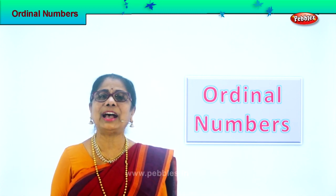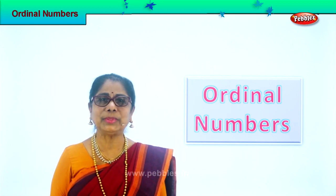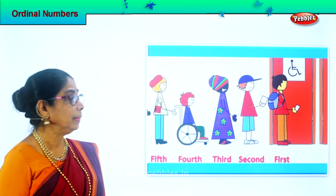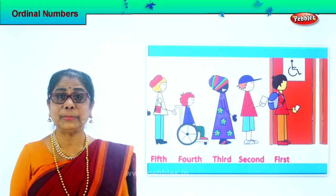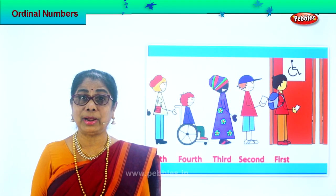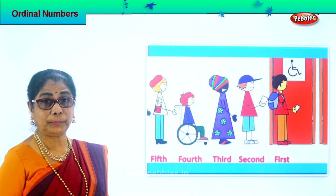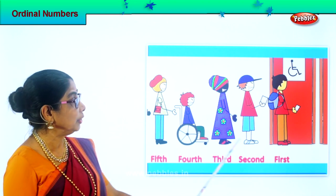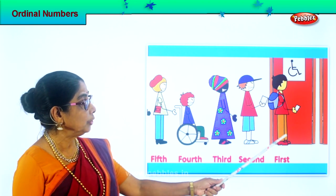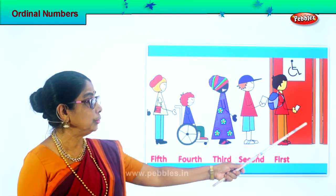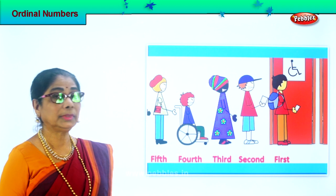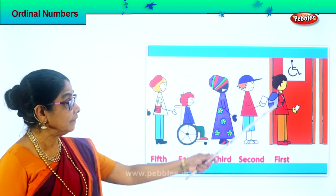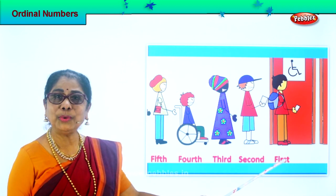Let's look at our first example and recall the ordinal numbers we've already learned. Now look at the queue here. You're getting into the door and that's the first person.